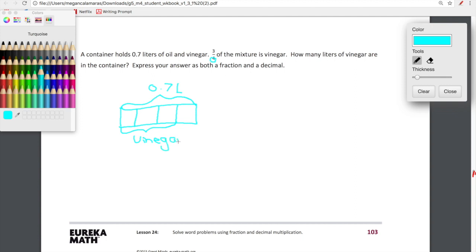Okay, so next, we have to do 0.7 as a fraction which equals 7 over 10. Next, to find out how many liters of vinegar is in the container, we have to do 7 over 10 times 3-fourths. 7 times 3 equals 21 over 10 times 4 which equals 40. That is our fraction form.